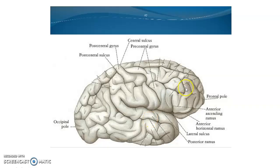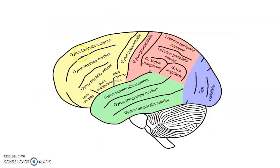Again, that's the temporal lobe, frontal lobe, and parietal lobe. This is the post-central gyrus and the central sulcus, and this is the pre-central gyrus. Pre-central is on the frontal lobe and post-central is on the parietal lobe. The frontal lobe has superior frontal gyrus, middle, and inferior, and the inferior has pars orbitalis, triangularis, and opercularis. Pars triangularis and opercularis form Broca's area for motor speech. The central sulcus separates the parietal lobe from the frontal lobe; in front of it is the pre-central gyrus and posterior to it is the post-central gyrus. The parietal lobe is divided into superior parietal gyrus, inferior parietal gyrus, and the remaining portion has the supramarginal and the angular gyrus.